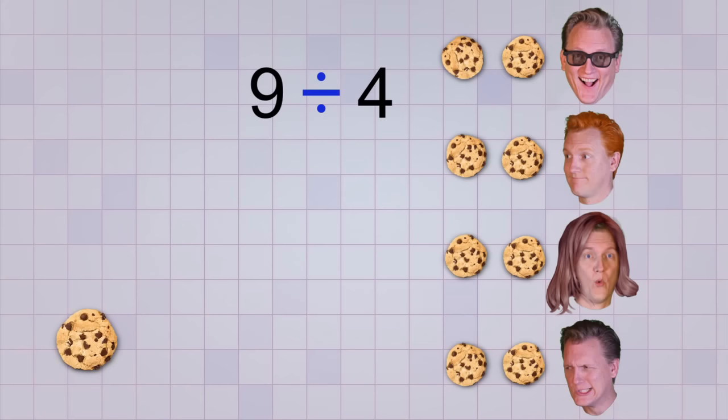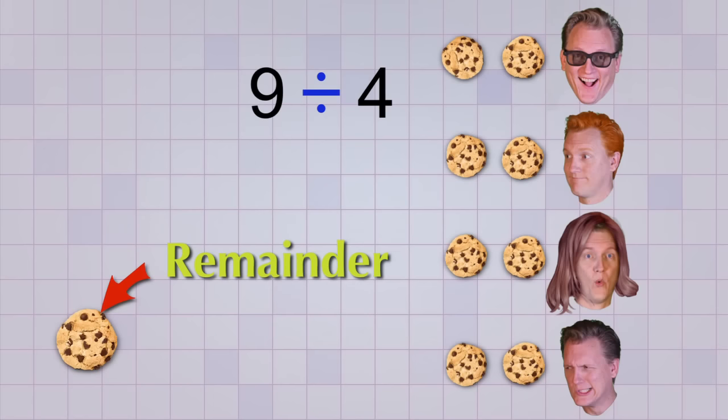Like if you had 9 cookies and 4 kids. Each kid could have 2 cookies, but there would be 1 left over. And in division, that leftover amount is called the remainder. So the answer to 9 divided by 4 is 2 with a remainder of 1.